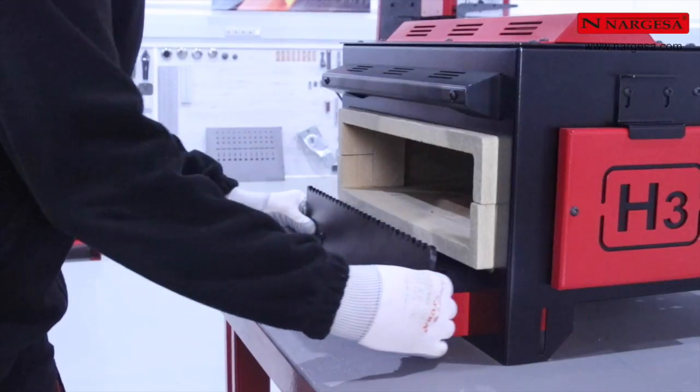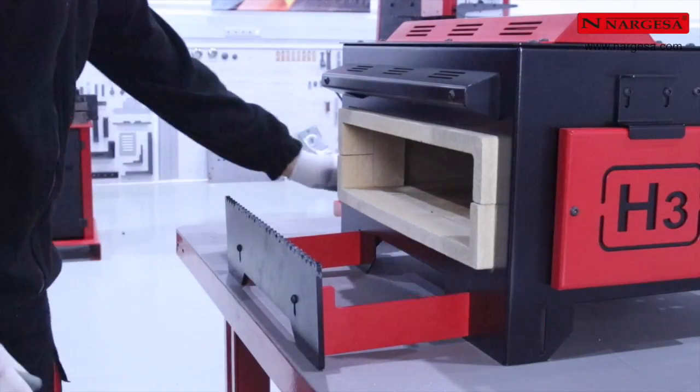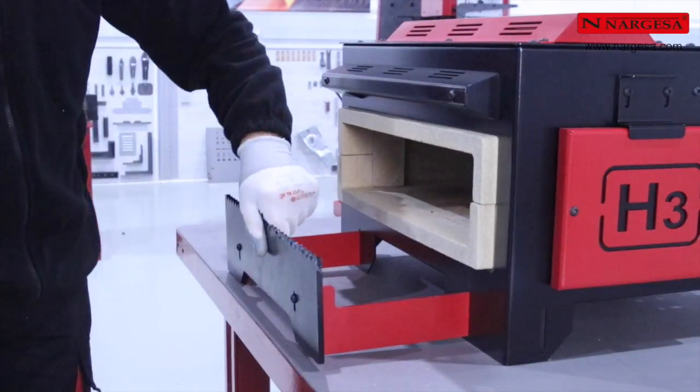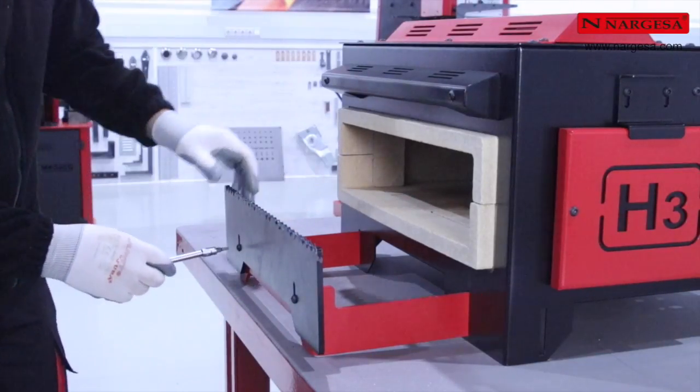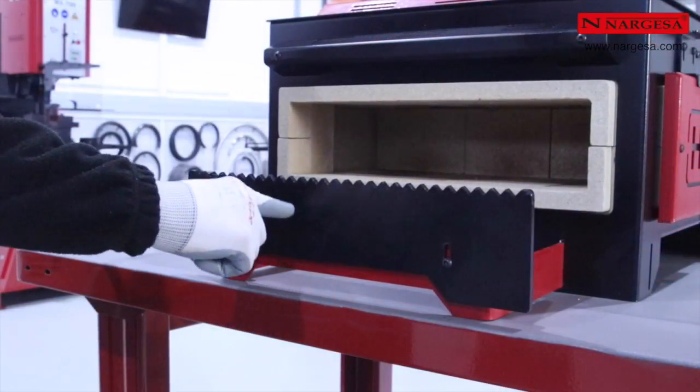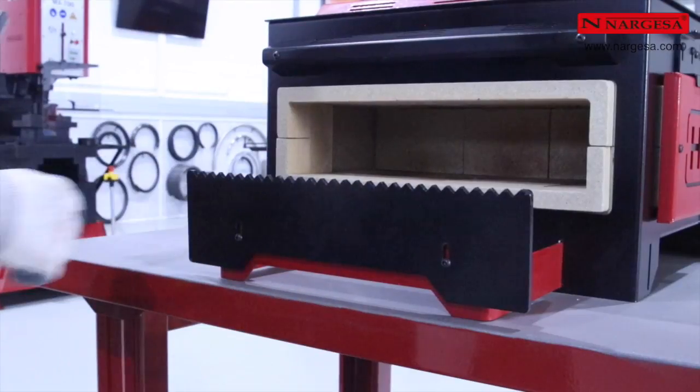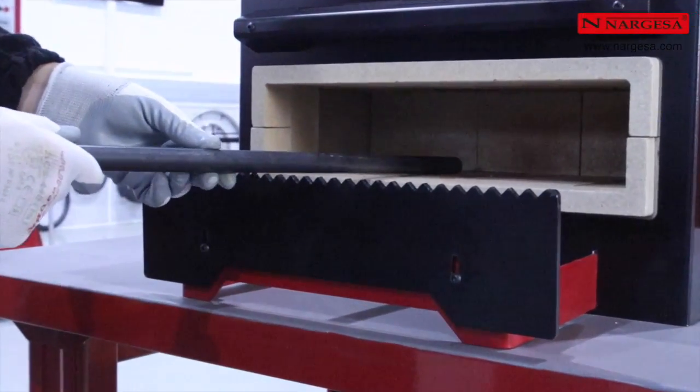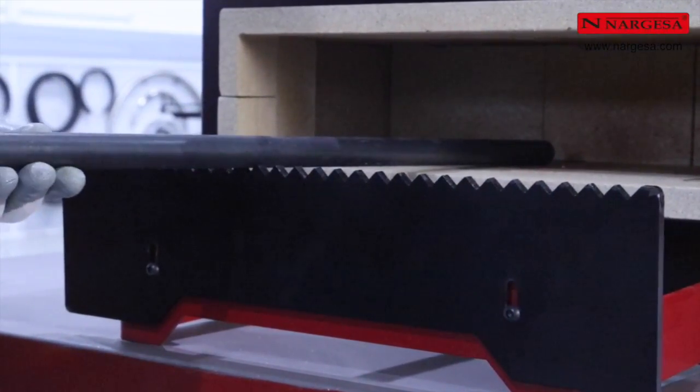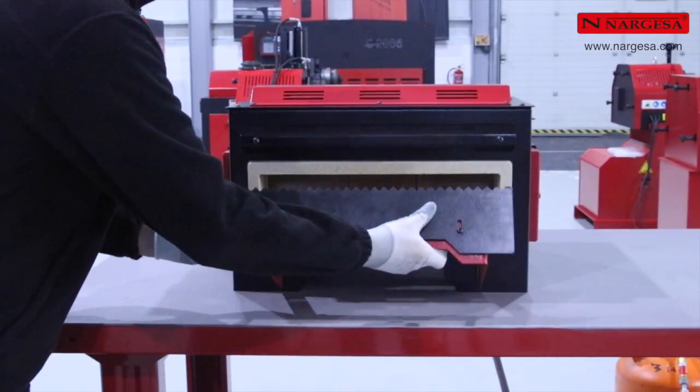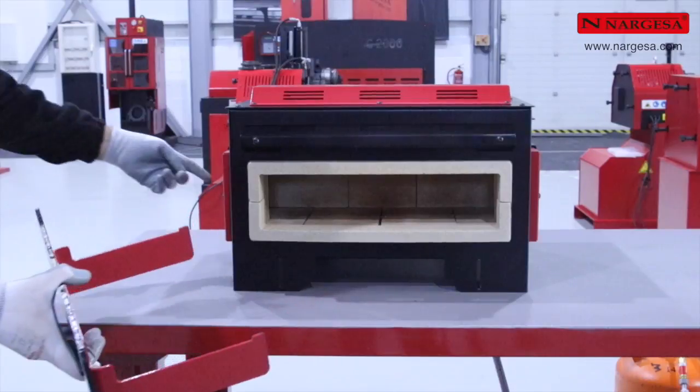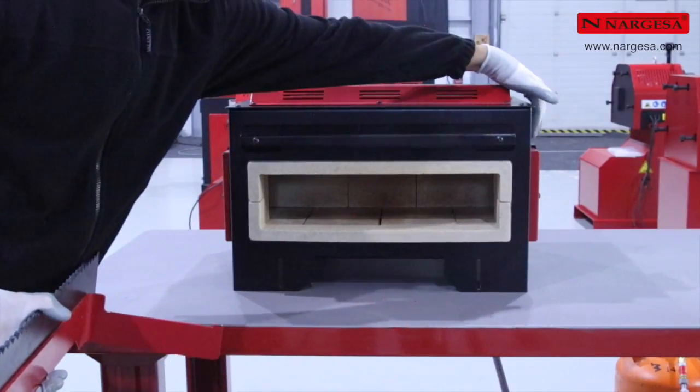Le four est muni d'un support auxiliaire pour soutenir les pièces à travailler. Il peut être ajusté en longueur et en hauteur. Cet élément d'appui est dentelé pour éviter le déplacement latéral des pièces.